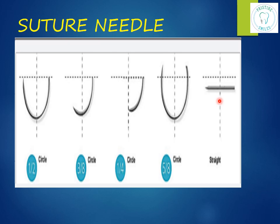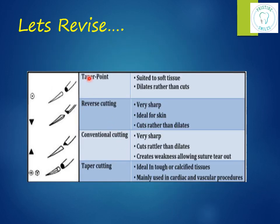Curved needles are better because they can be passed through a limited space, which is not possible with a straight needle. There are two types of curved needles: cutting and tapered. The cutting needle is used for suturing skin — it has sharp tips and edges and passes more easily through the mucoperiosteum. The cutting portion extends through about a third of the needle's length; the rest is rounded. The cutting needle is ideal for keratinized tissues like palatal mucosa. Tapered needles are used for more delicate tissues like eye or vascular surgery — the taper point dilates rather than cuts.